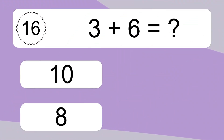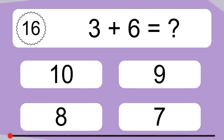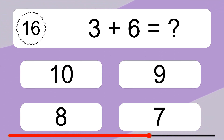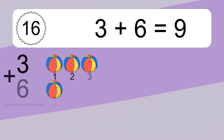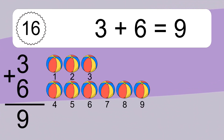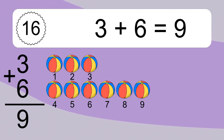3 plus 6 equals what? 3 plus 6 equals 9. Let's count it. 1, 2, 3, 4, 5, 6, 7, 8, 9.